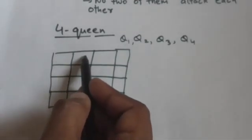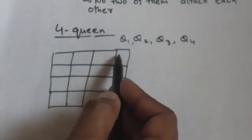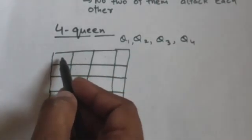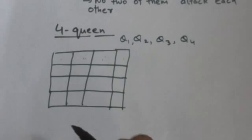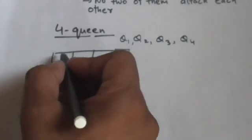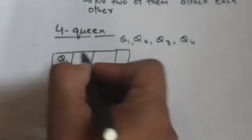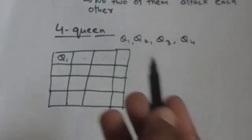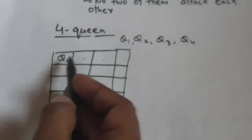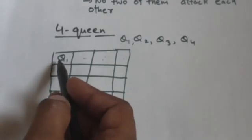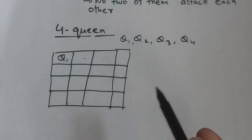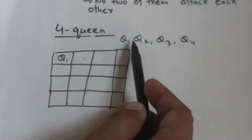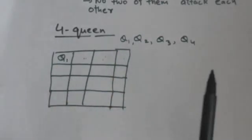We have four options — we can place Q1 on any square of the first row. Suppose we have chosen the first option and placed Q1 in the first square of the first row. Now we have to place queen Q2 in the second row.